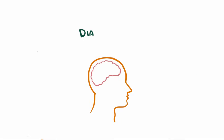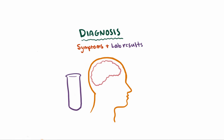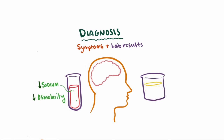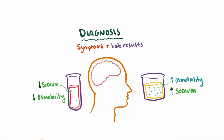It's not hard to suspect someone might have SIADH. All we have to do is consider your symptoms in addition to your lab results. Low blood sodium levels and low plasma osmolarity combined with high urine osmolality and high urine sodium is a big red flag for SIADH.